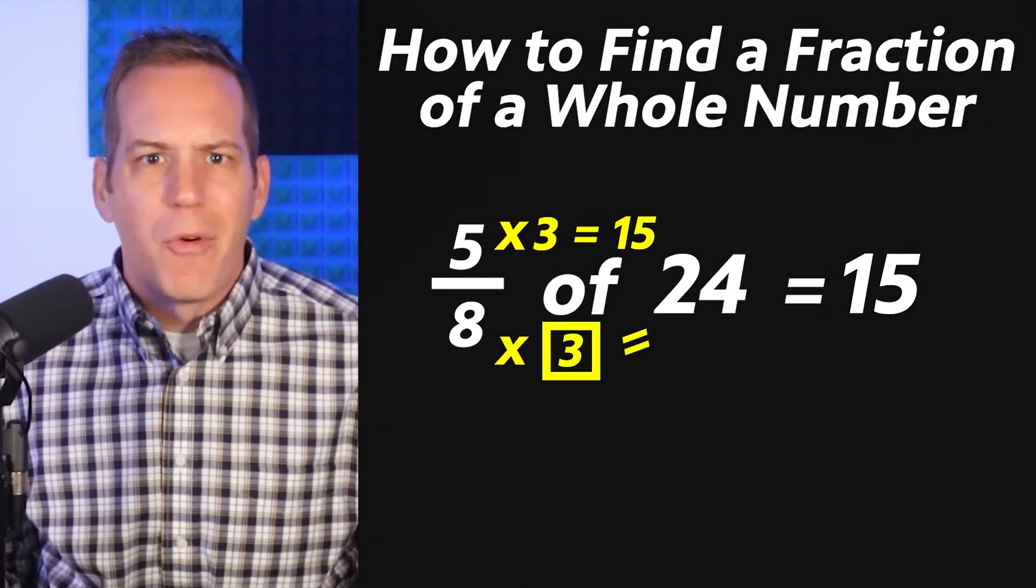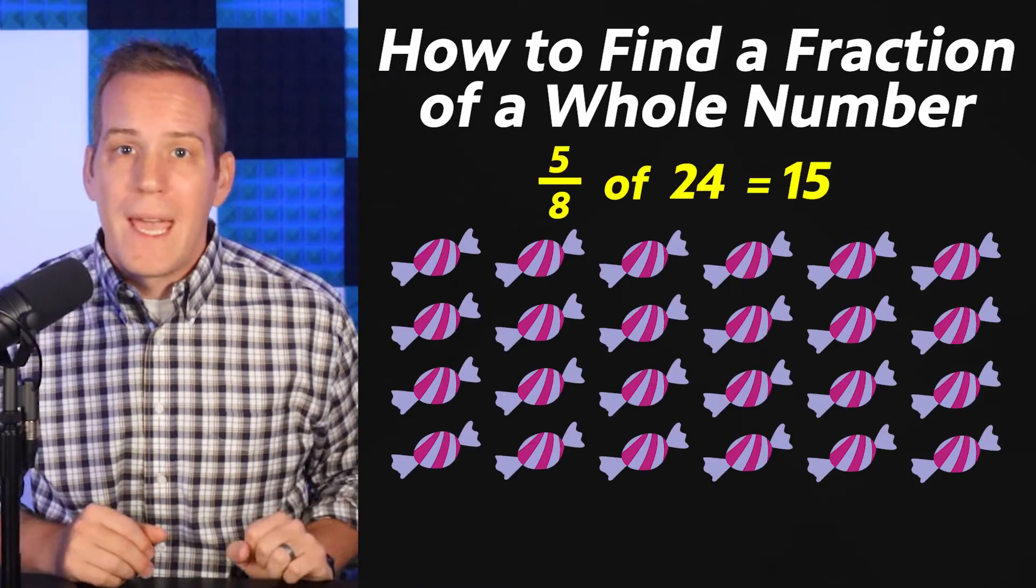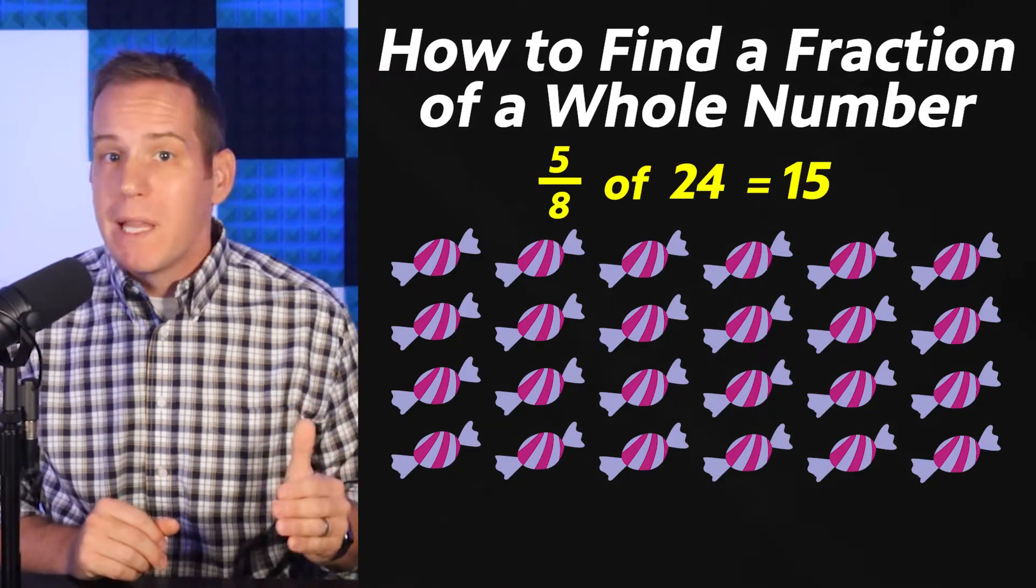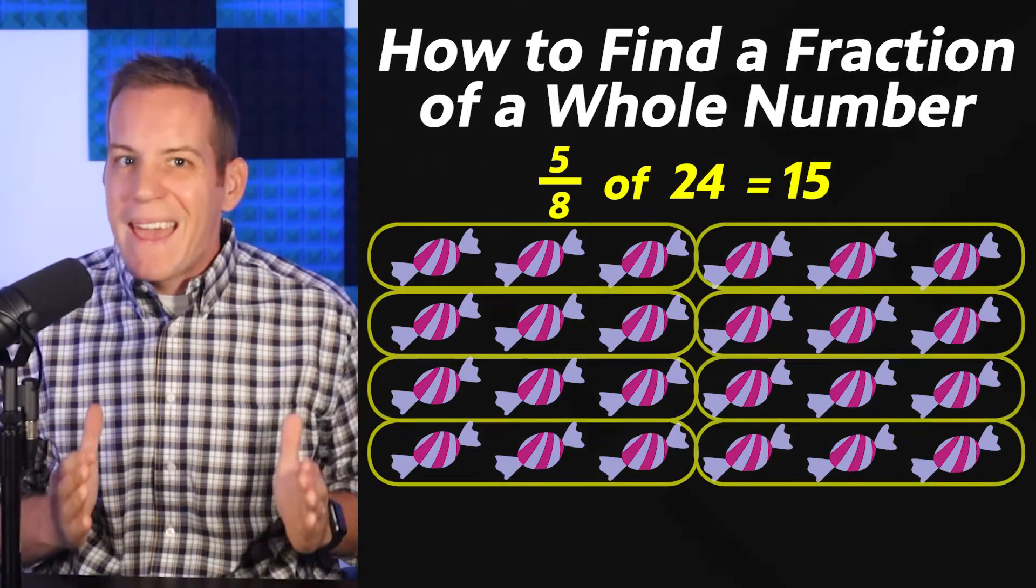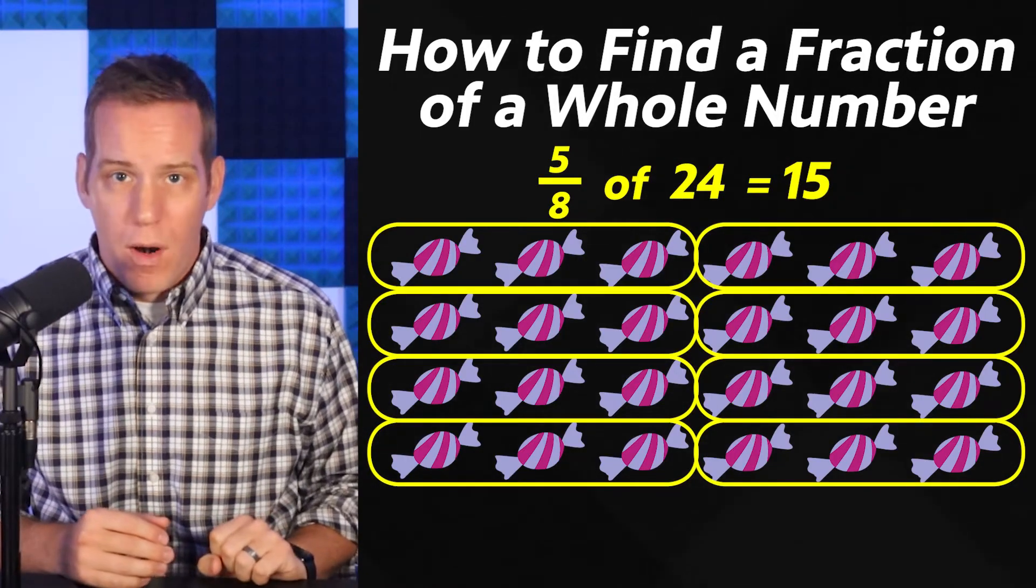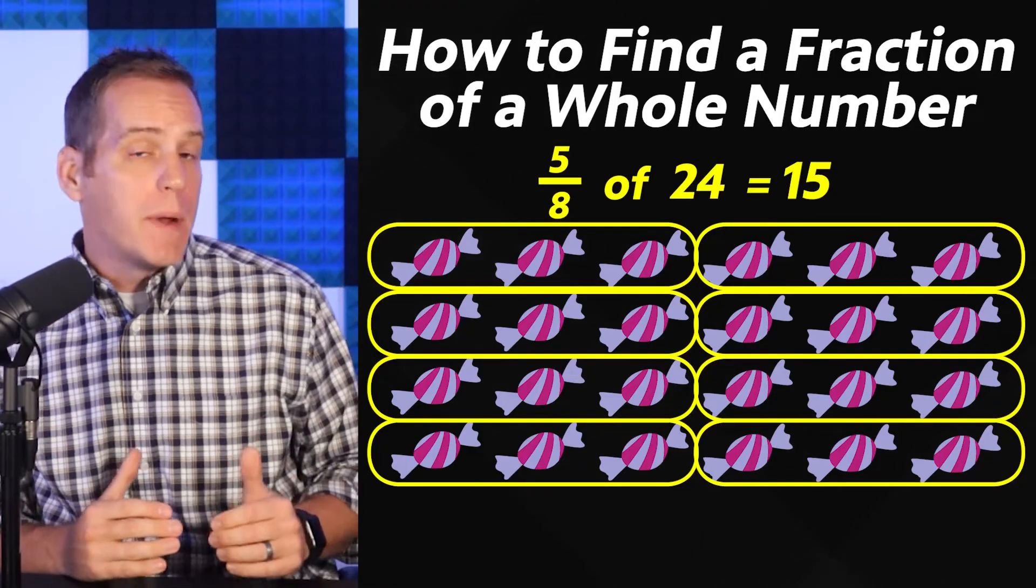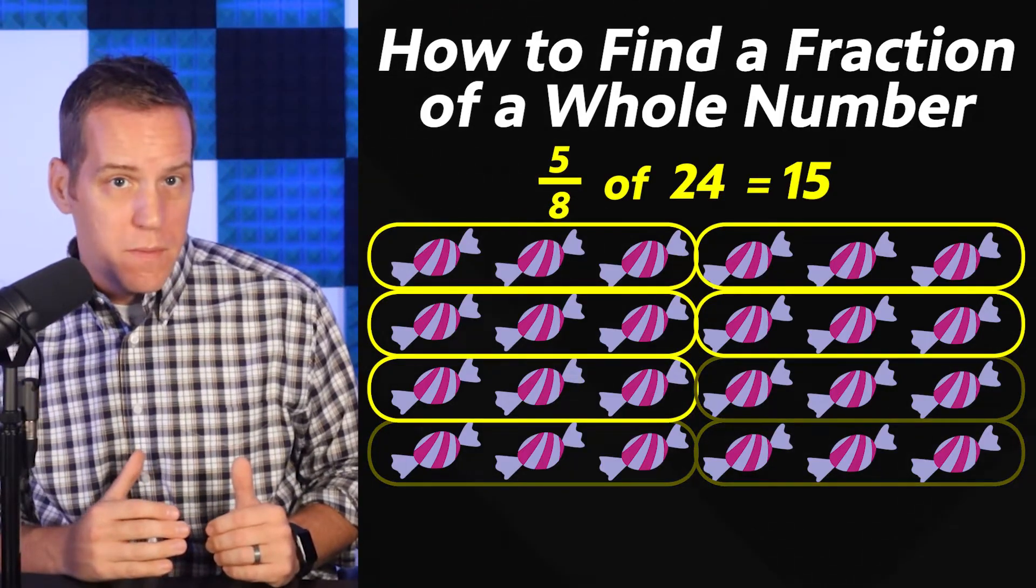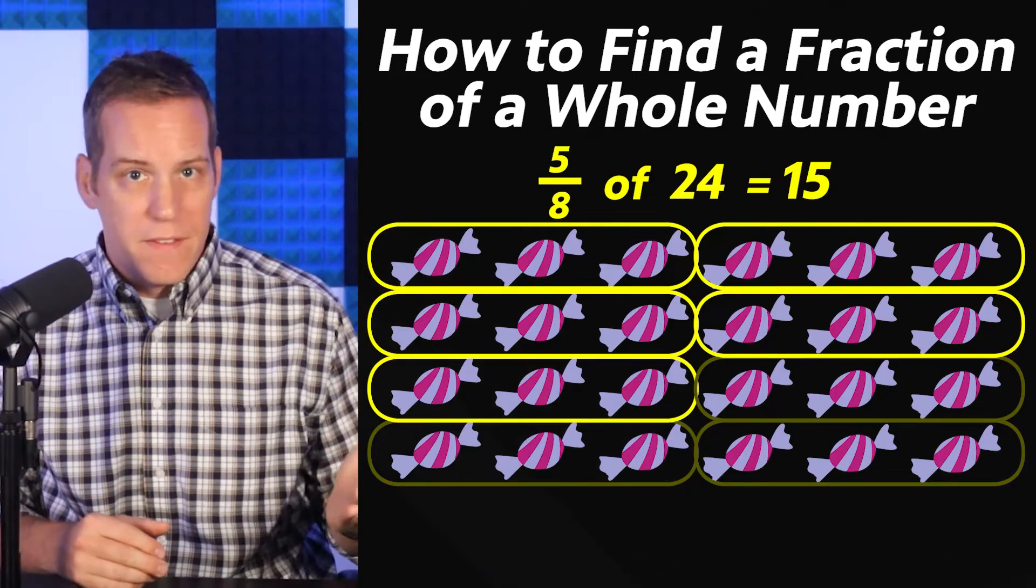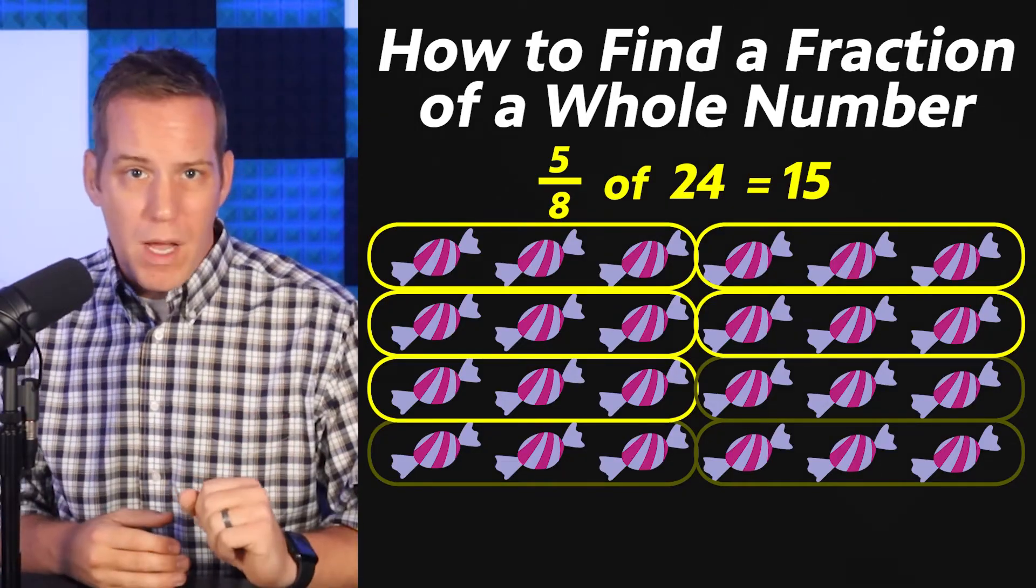Now how the heck did that work? Well let's look at this model. Let's look at those 24 candies again. To find 5 eighths would mean I need to first split the 24 candies into 8 equal groups. Each of these groups is 1 eighth of 24. So to find 5 eighths I would need to know how many are in 5 groups and that's easy right? 5 of these groups would make 15. So what I showed you earlier is kind of the shortcut for solving this type of problem.